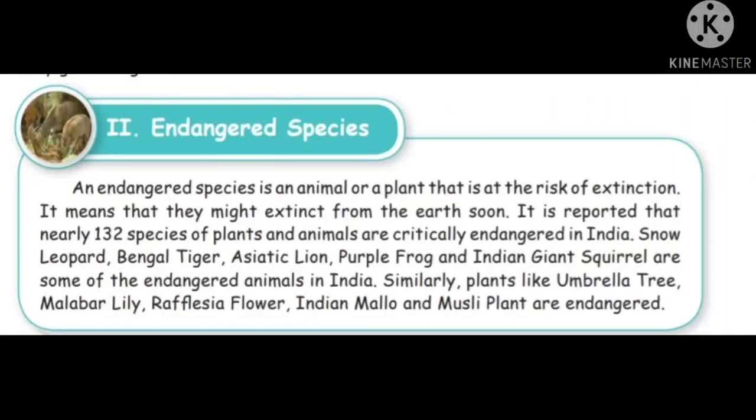We move on to the topic: endangered species. An endangered species is an animal or a plant that is at risk of extinction — meaning they might go extinct from the earth soon. It is reported that nearly 132 species of plants and animals are critically endangered in India.